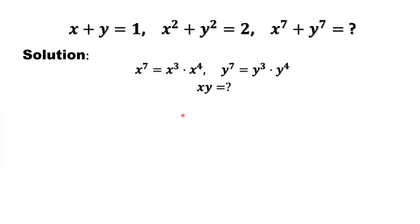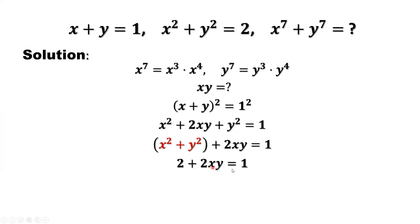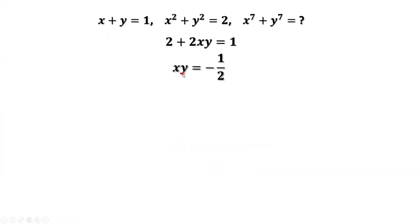We need to find the cross term x times y first. We use the first given condition and take squares on both sides: x plus y squared equals 1 squared. Expanding the left-hand side gives x squared plus 2xy plus y squared equals 1. Grouping x squared plus y squared, and substituting the second condition x squared plus y squared equals 2, we solve to get x times y equals negative one half.